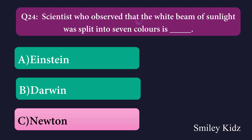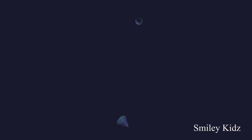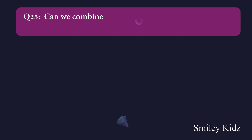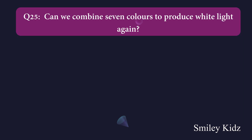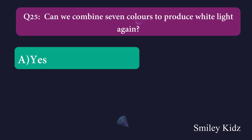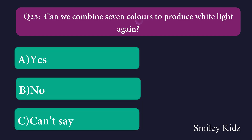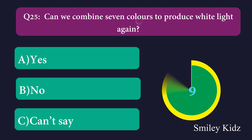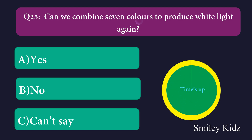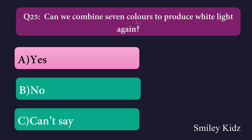Question number twenty-five: Can we combine seven colors to produce white light again? Option A: yes, Option B: no, Option C: can't say. The right answer is yes. We can combine seven colors to produce white light again.